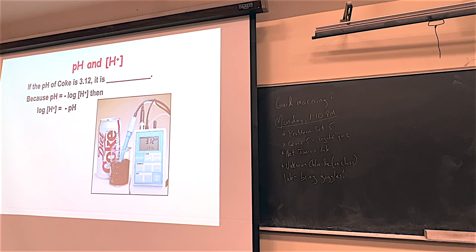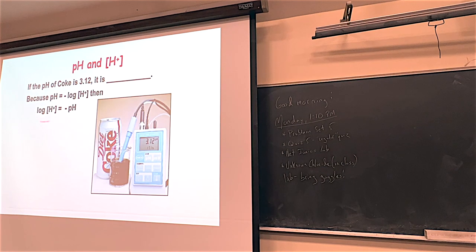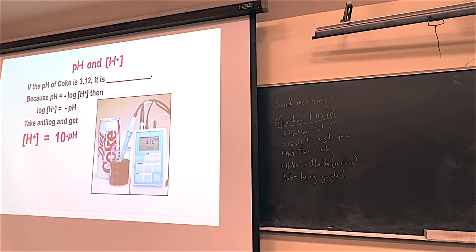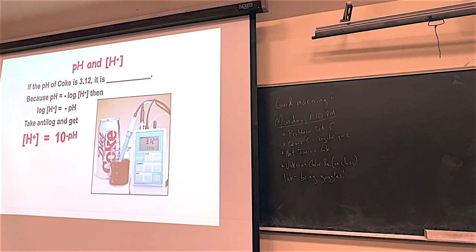3.12 equals minus log of H+. The first thing you want to do is put the minus on the other side. To get rid of the base 10 log, you raise 10 to the power of X. So if you go 10 to the log of H+, the 10 to the power of log cancels out and the H+ comes down. On the right side, you go 10 to the power of minus pH, and you're good to go.